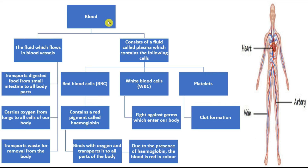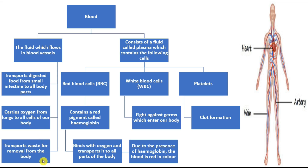Let's first talk about the human body. Blood is the fluid which flows in blood vessels and it transports digested food from the small intestine to all parts of the body. We had learnt in the chapter of Nutrition in Organisms that the villi in the small intestine absorbs the nutrients from the food and then it passes into the blood for transportation. Second, blood carries oxygen from lungs to all cells of our body. Third, it also transports waste for removal from the body.